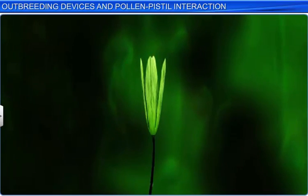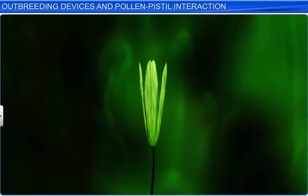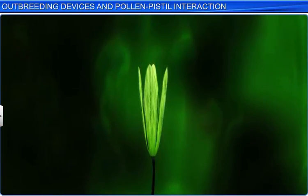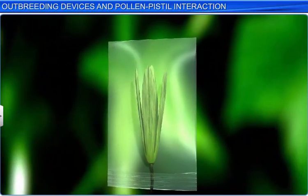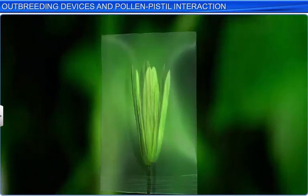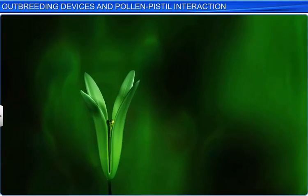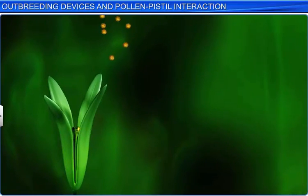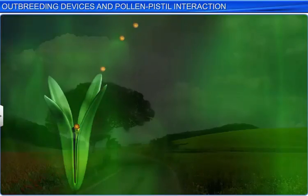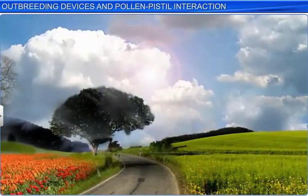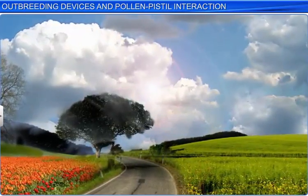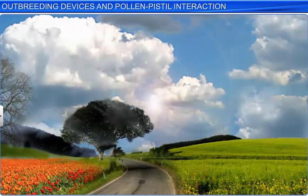In the case of female plant-bearing unisexual flowers, emasculation is not needed. Instead, the female flower is bagged before it blooms. After the flower has bloomed and the stigma has become receptive, the desired pollen is dusted over the stigma before re-bagging the flower. In this way, pollen-pistil interaction allows the plant to recognize the pollen and promote its germination for fertilization to take place. Moreover, gaining knowledge in this field enables the growth of a superior variety of crops.